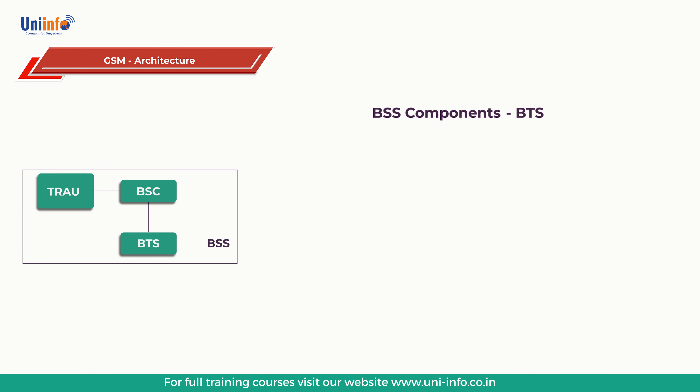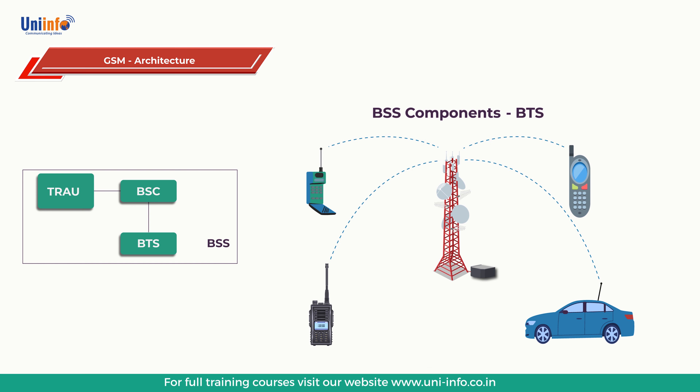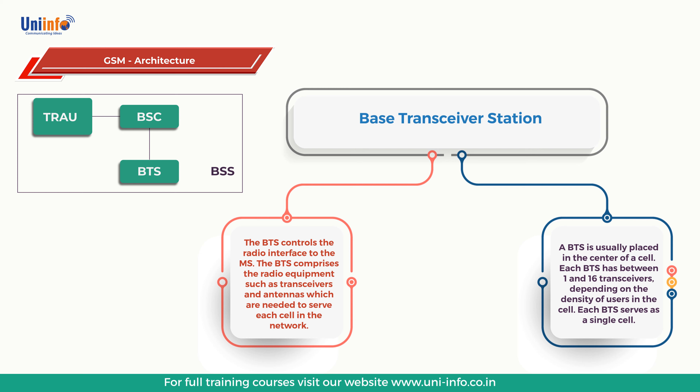First we will learn about the base transceiver station (BTS). The BTS controls the radio interface to the MS. The BTS comprises radio equipment such as transceivers and antennas which are needed to serve each cell in the network. A group of BTS are controlled by a BSC. The BTS houses the radio transceivers that define a cell and handle the radio link protocols with the MS. A BTS is usually placed in the center of the cell, and its transmitting power defines the size of a cell. Each BTS has between 1 and 16 transceivers depending on the density of users in the cell, and each BTS serves as a single cell.